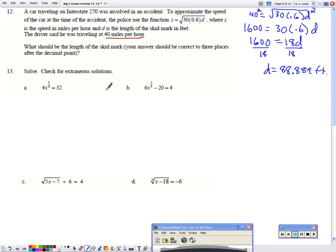Number 13, solve. Check for extraneous solutions. I have 4 times x to the 3 fourths equals 32. Now I want to follow the order of operations. The order of operations says I have to take care of any exponents before multiplication, which means to solve, I'm going to go backwards. So is there any adding or subtracting? No. Is there any multiplying or dividing? Yes. I'm going to divide by 4. Now I have x to the 3 fourths equals 8. Now I'm going to raise both sides to the 4 thirds. That way this will cancel off and we'll have x. Now you can either do this in your calculator or your head. The third root of 8 is 2. 2 to the fourth power is 16.